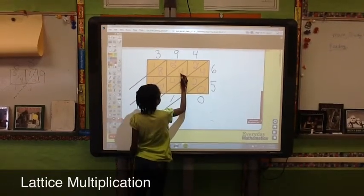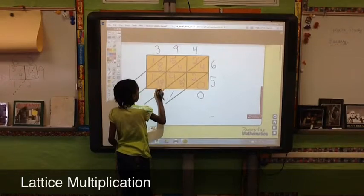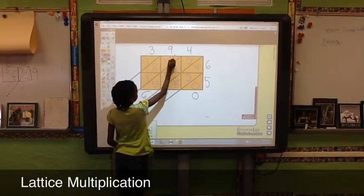3 plus 4 equals 7. 7 plus 4 equals 11, 11 plus 5 equals 16. You have the one up here.